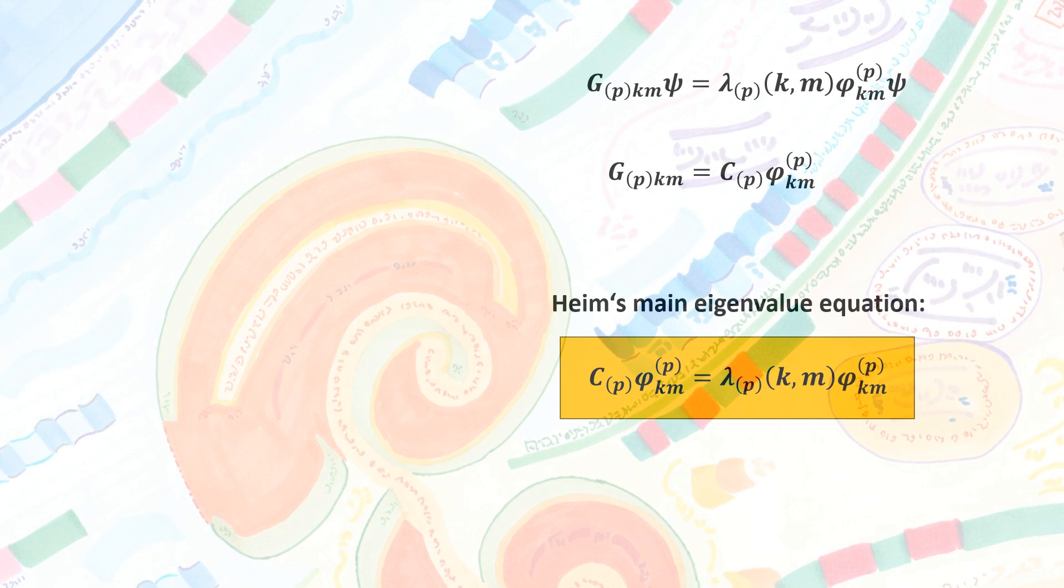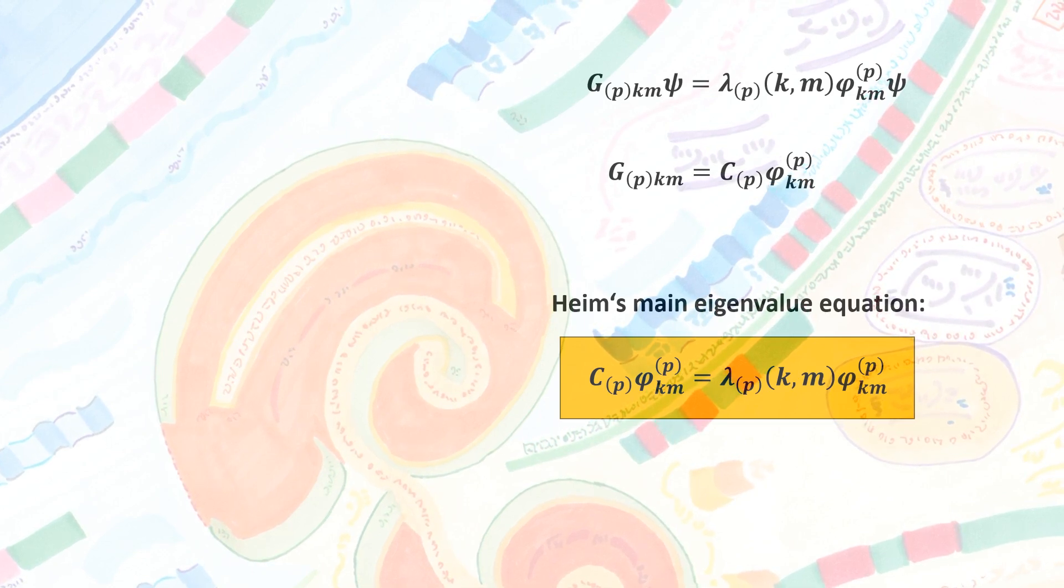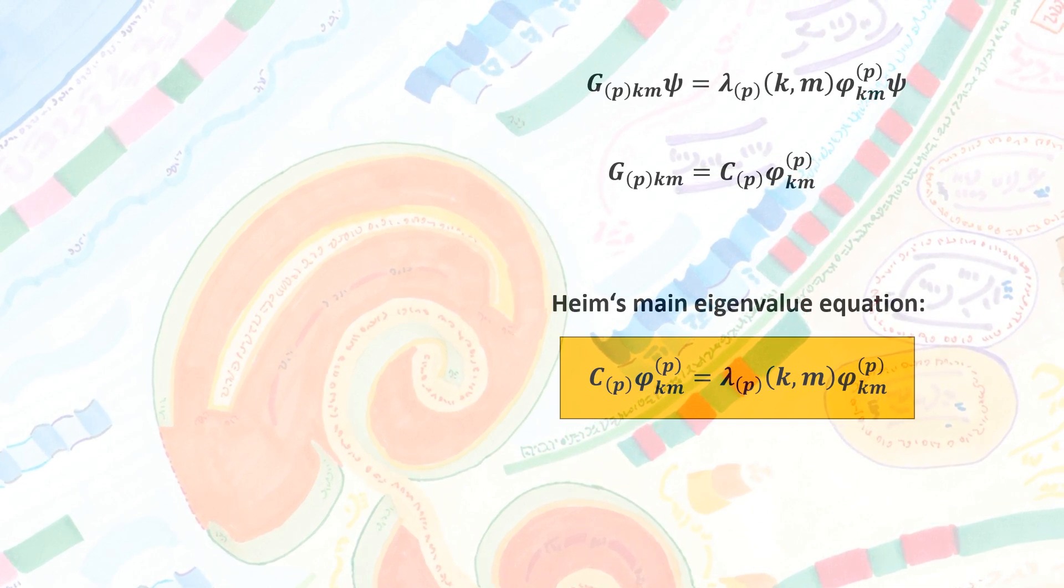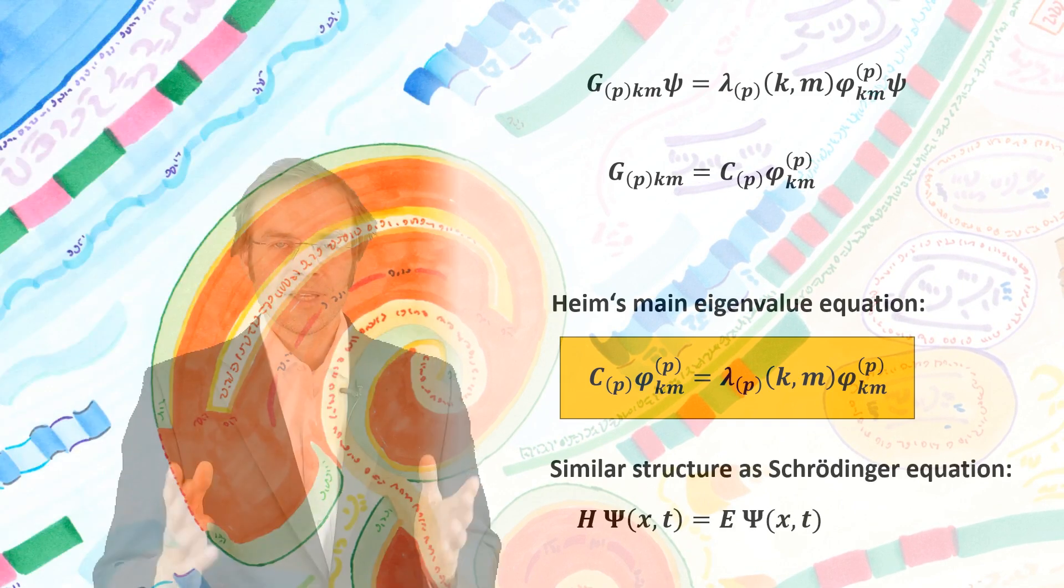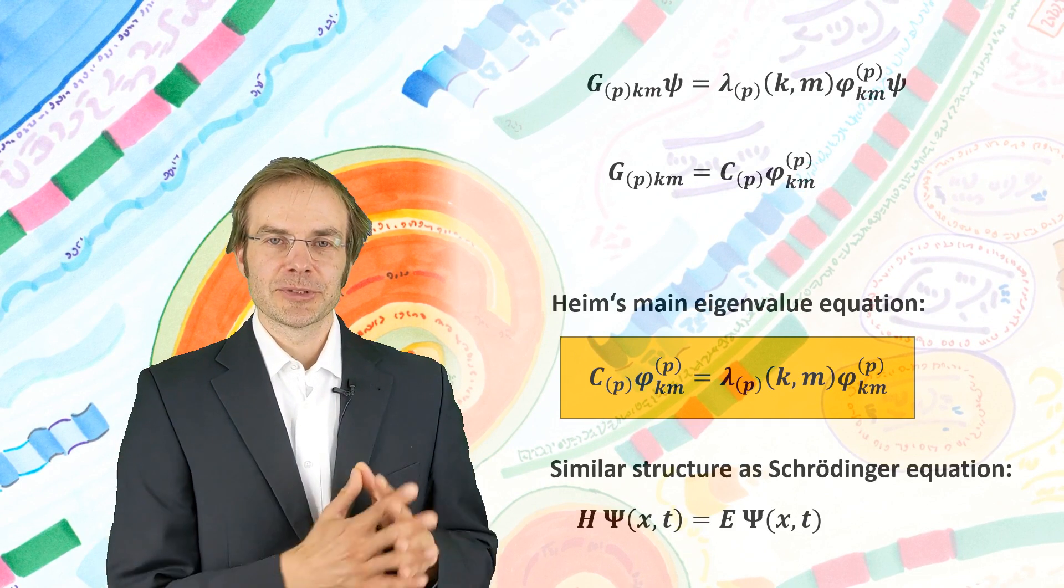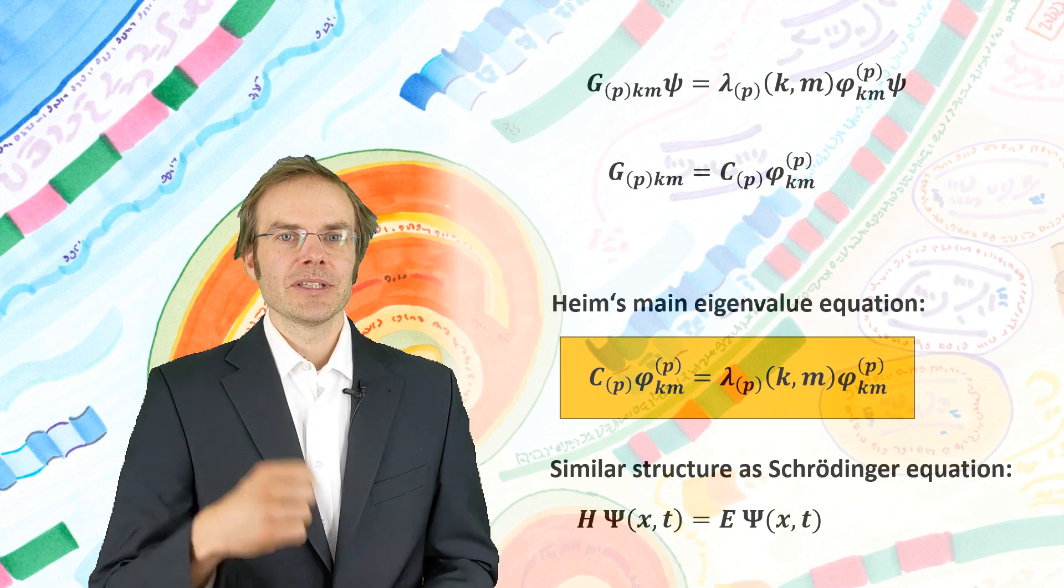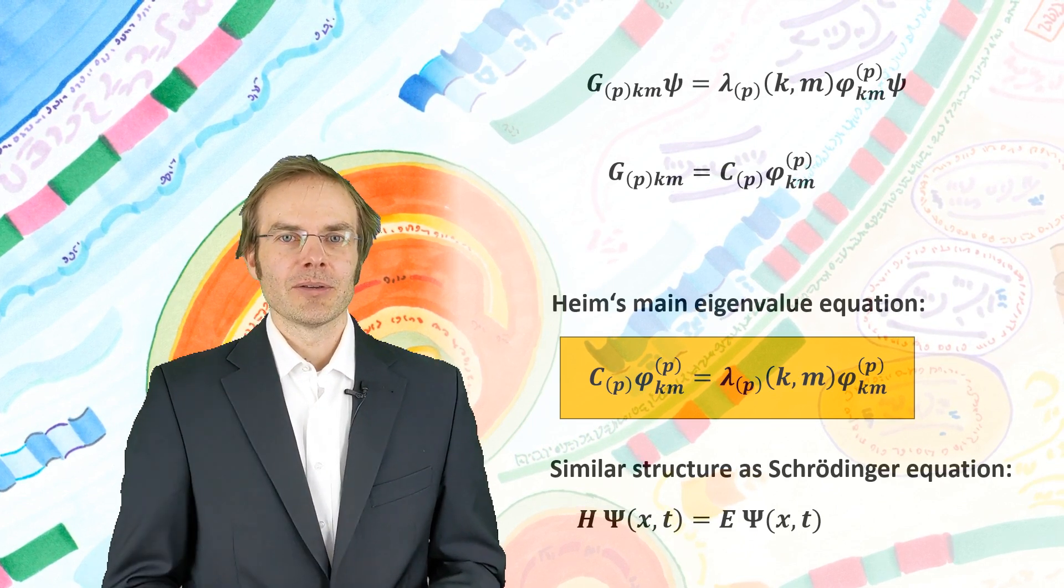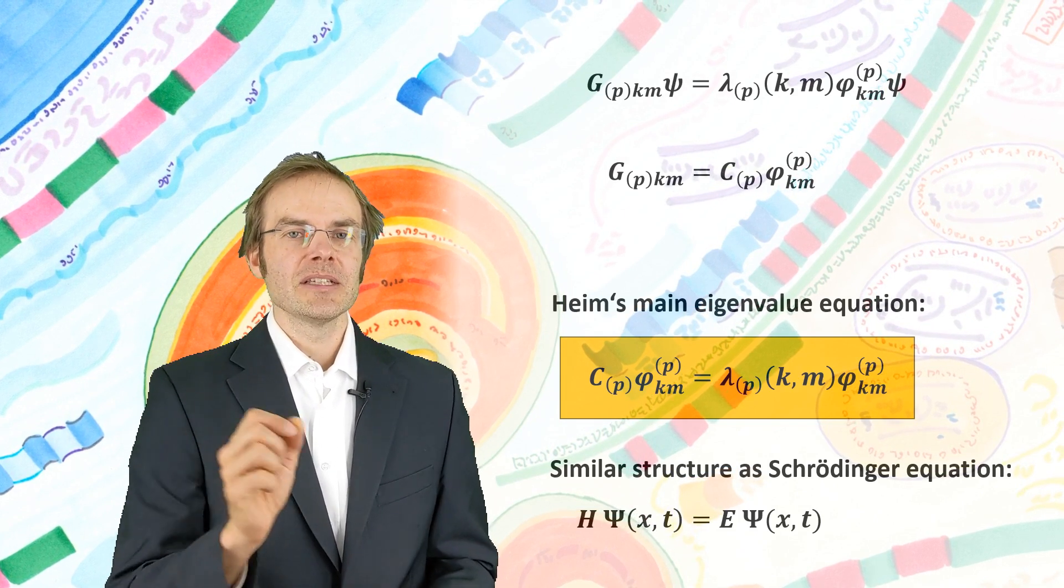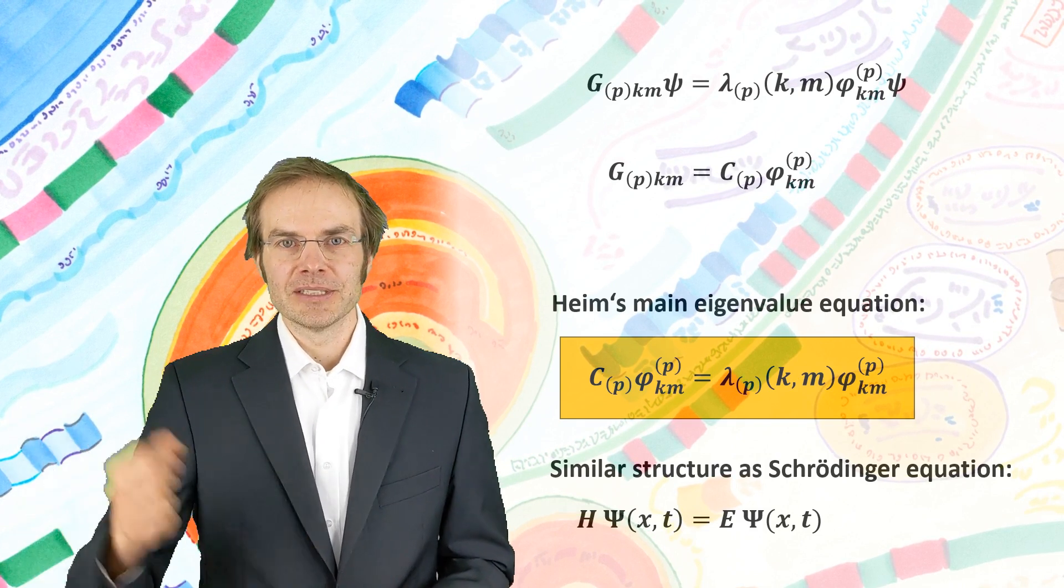We have discrete point spectra here in terms of the lambda values. And therefore this equation fulfills the basic requirement of quantization. And if we look at this equation now, we find that it has a very similar structure, interestingly, as the Schrödinger equation, which is Hamiltonian on psi, where uppercase psi is the probability state function, equals energy state times probability state function.